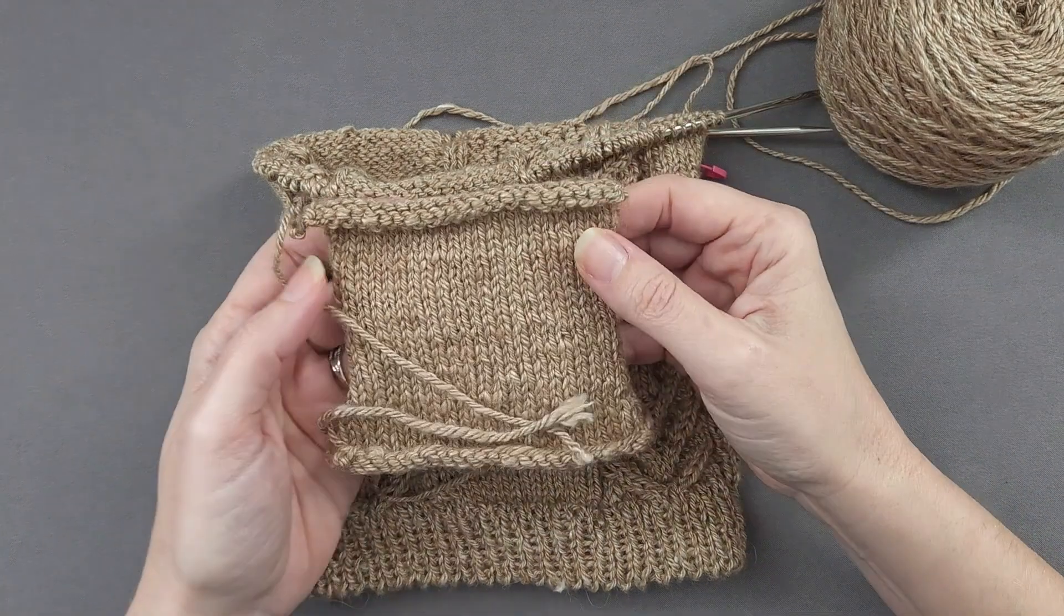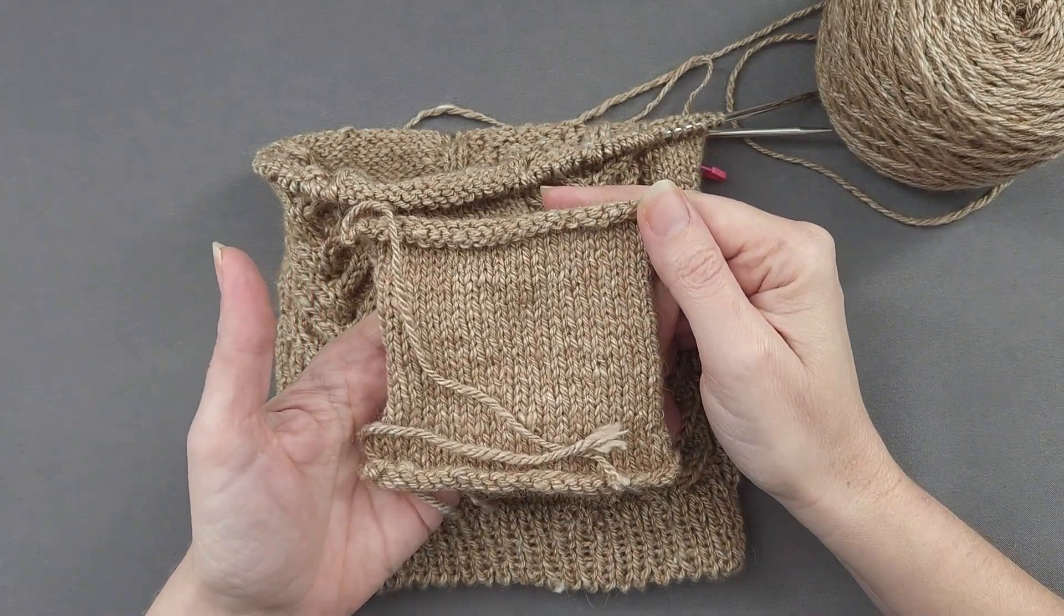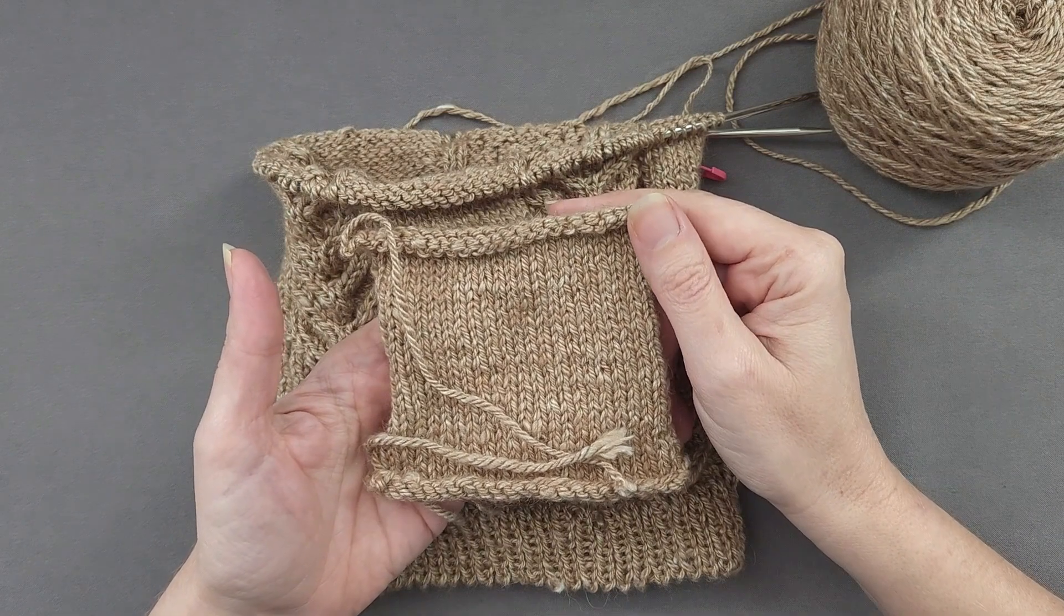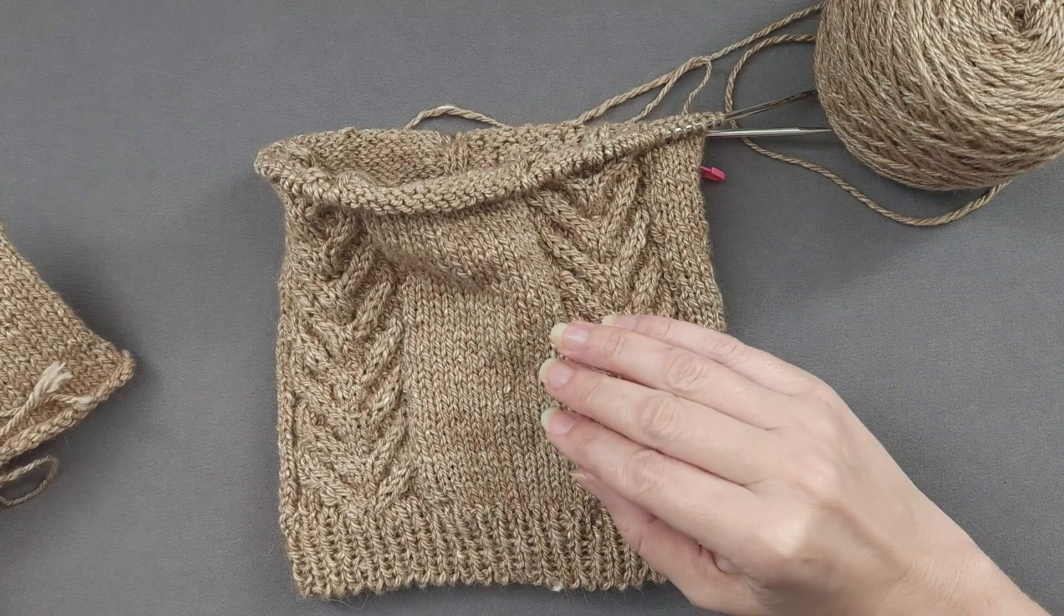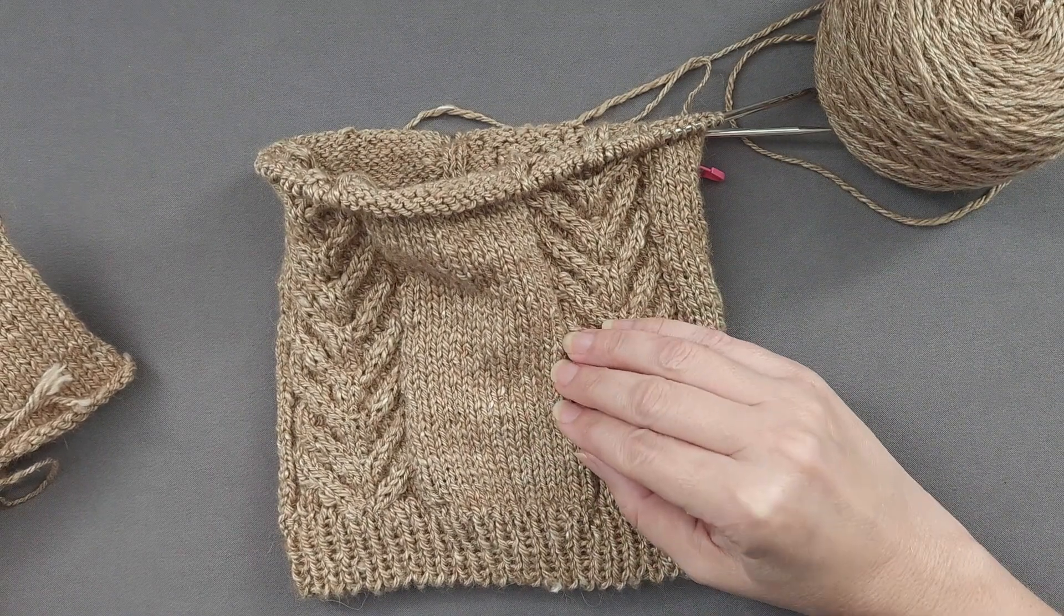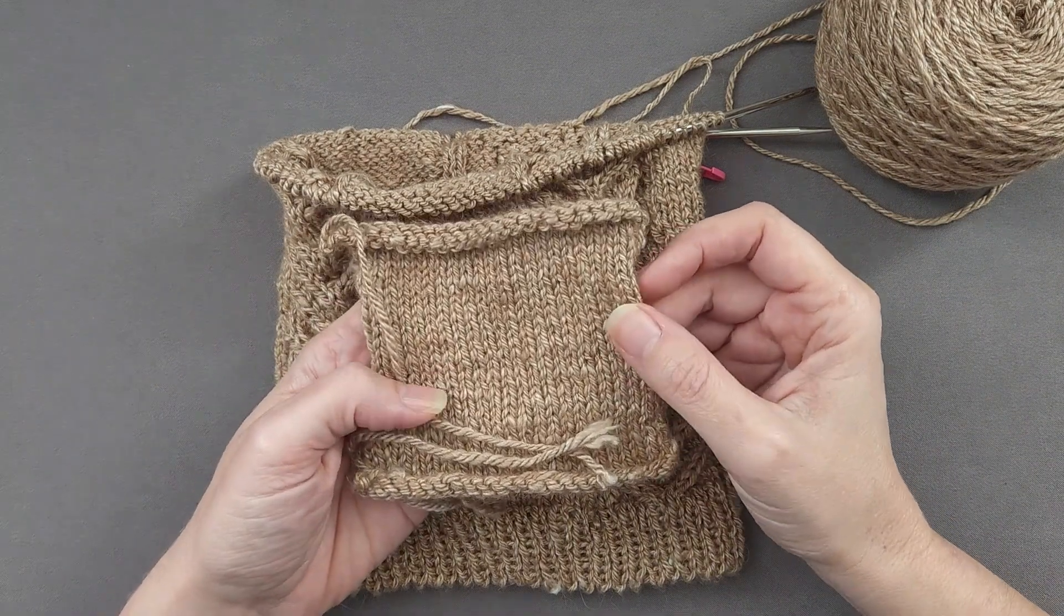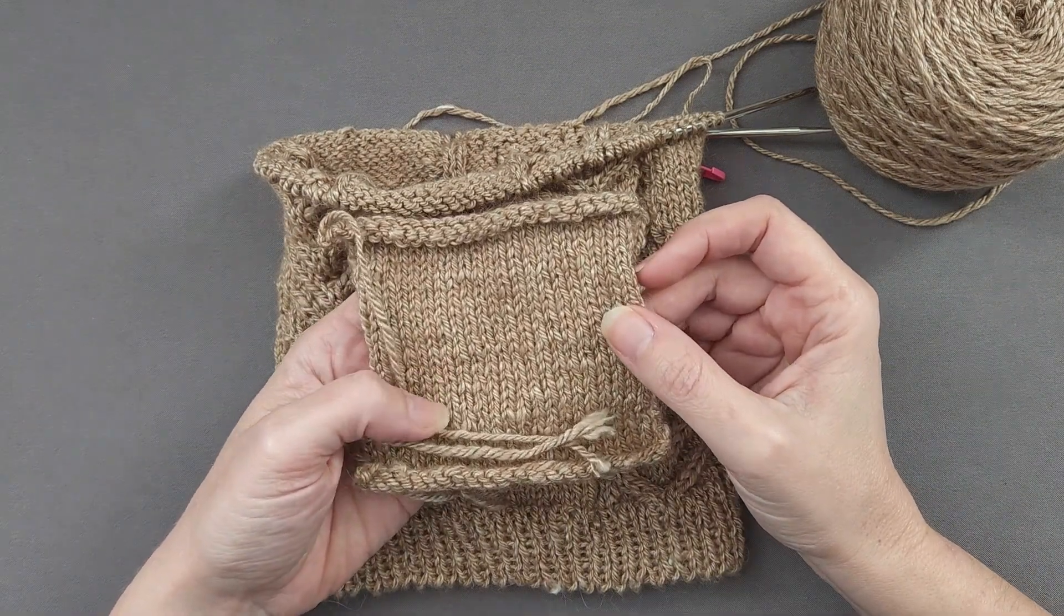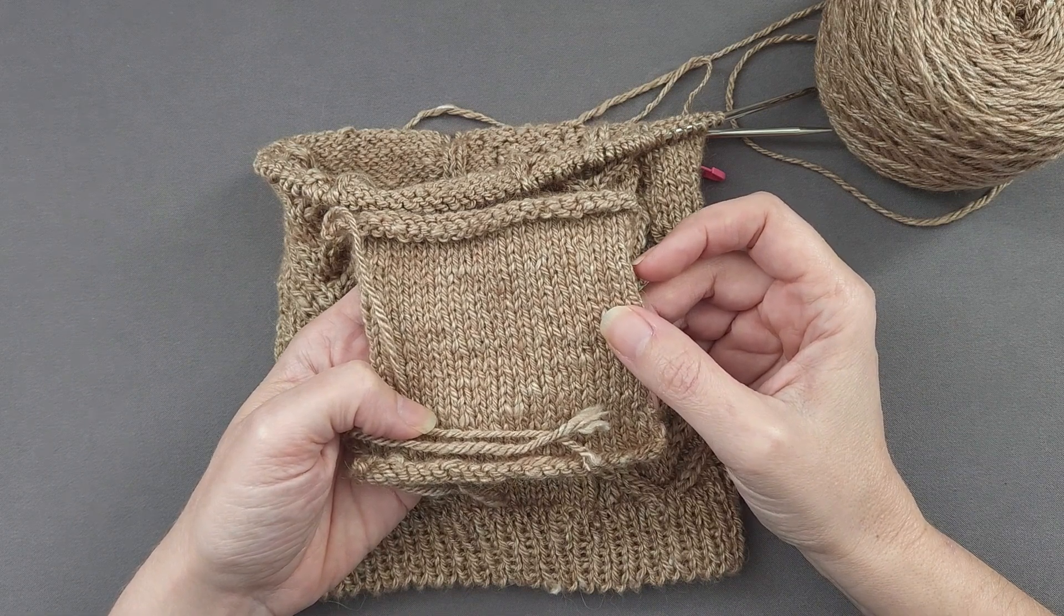Also remember that your gauge should be measured on fabric that has been washed and blocked in the same way you intend to wash and block your finished project. For this hat, my gauge is 22 stitches and 30 rounds per 4 inches. Let's get started.